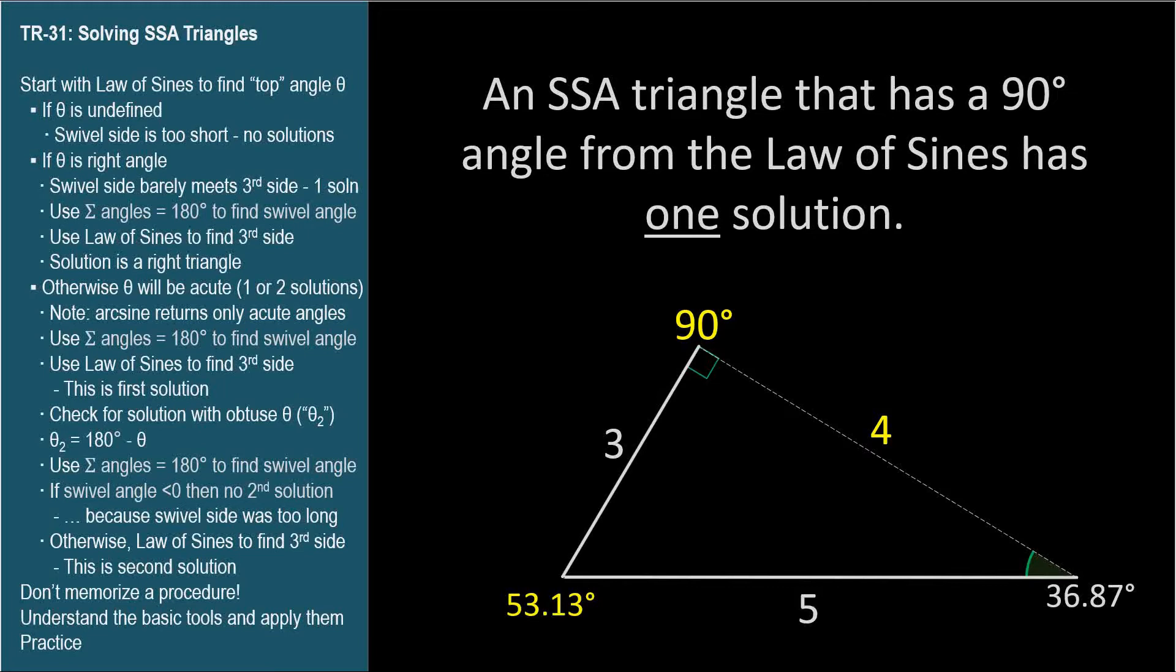So far so good. When we use the law of sines and get an undefined answer, there's no solution. When we get an angle of 90 degrees, we've found a unique right angle solution.